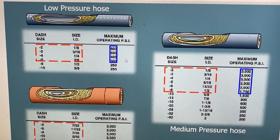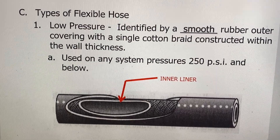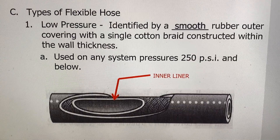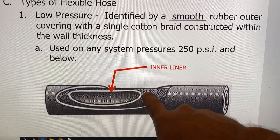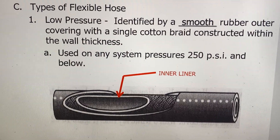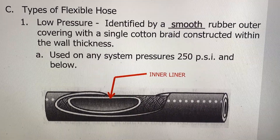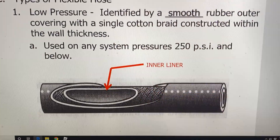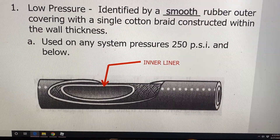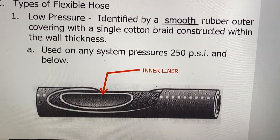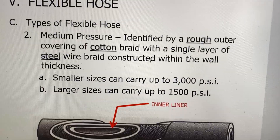Low pressure line — any line that's 250 PSI or below. It's limited to low pressures because it's not very strong. The low pressure line has an inner liner and a reinforcement layer, but the reinforcement layer is simply a cotton braid — almost like a t-shirt type material. If cotton is the only thing reinforcing it, there's not much stopping it from expanding and popping, so it's limited to 250 PSI. It'll be identified by a smooth outer covering.